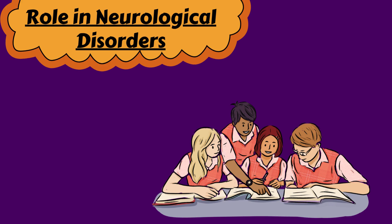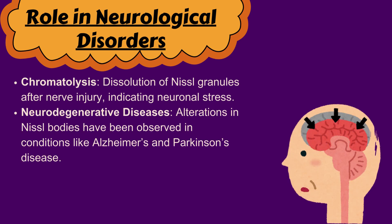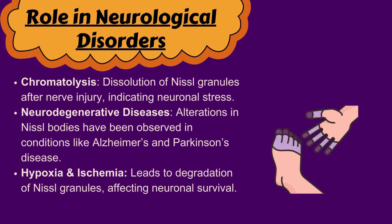Role in Neurological Disorders. Nissl granules are essential markers in neurological disorders. Chromatolysis — the dissolution of Nissl granules following nerve injury — indicates neuronal stress. Abnormalities in Nissl granules are observed in Alzheimer's and Parkinson's diseases. Hypoxia and ischemia, a lack of oxygen, can lead to their degradation, impairing neuronal survival and function.